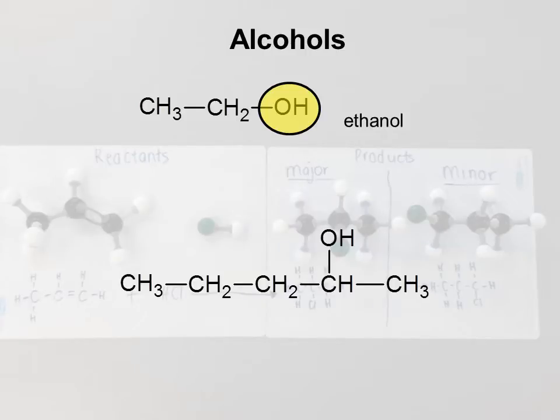This next example here, the OH group is coming off a second carbon, so it's going to be pentan-2-ol. Notice this is also classified as a secondary alcohol because the carbon that OH is attached to is attached to other carbons.